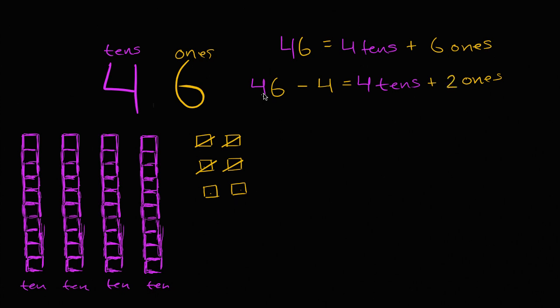And so you see when you had four tens and six ones, and you subtracted four ones, well six ones minus four ones is two ones. And so we get 46, let me do that in the same color. We get 40.